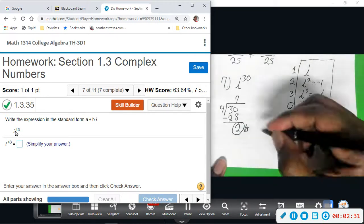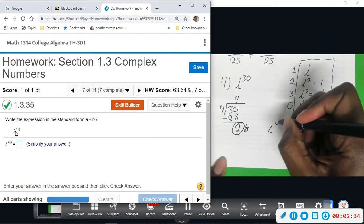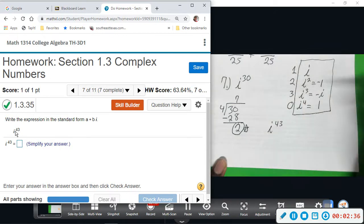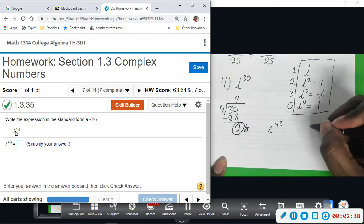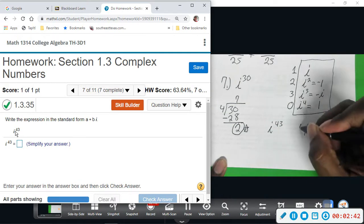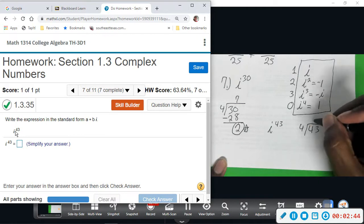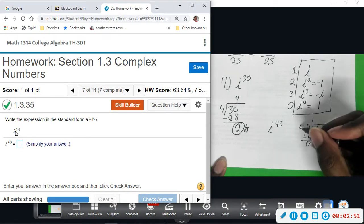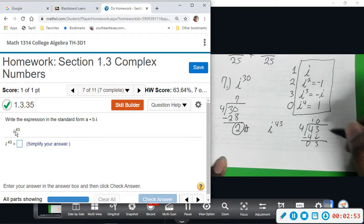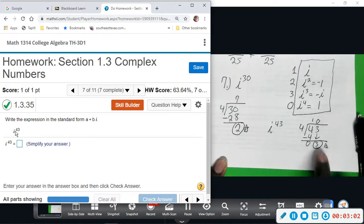You're going to take that power forty-three, we're going to divide it by four. Four goes into four once, subtract zero, bring down the three, and four will not go into three at all. So you have a remainder of three. That's your magic number.